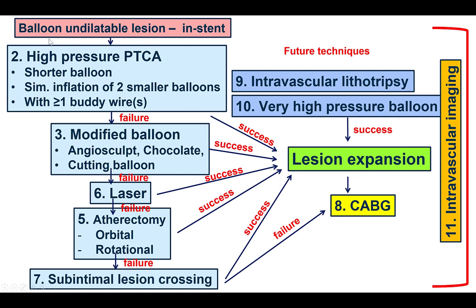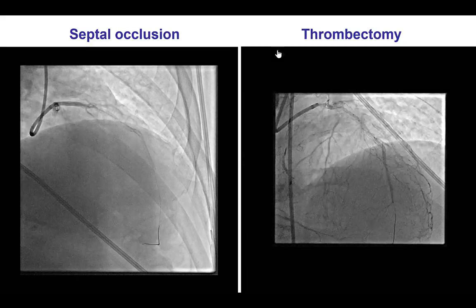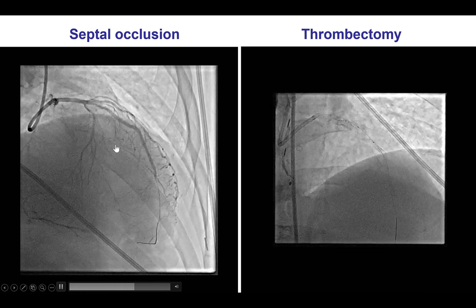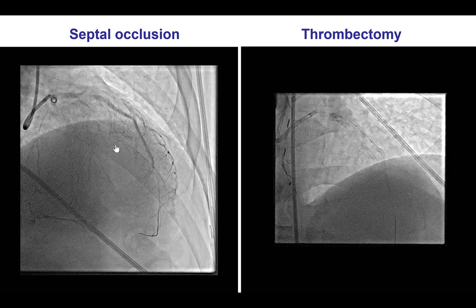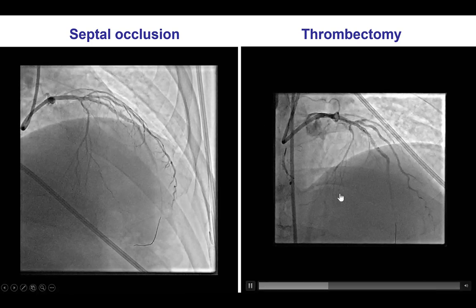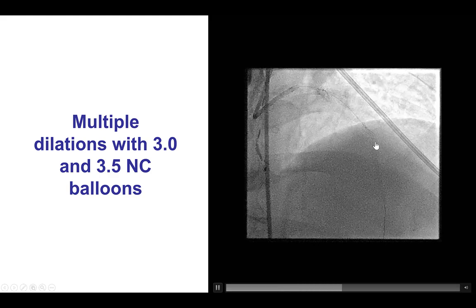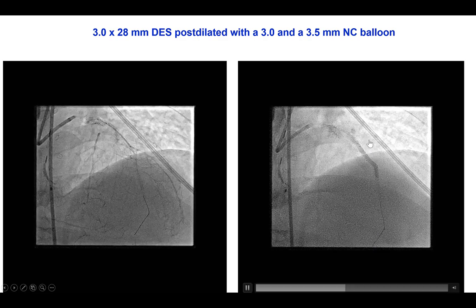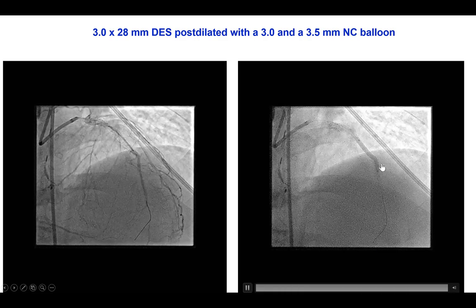So there were two problems: the balloon uncrossable lesion, and how to dilate the previously placed under-expanded stent. Typically this is achieved first with high pressure inflations of non-compliant balloons or plaque modification balloons. If this does not work, one can use laser and/or atherectomy, followed by subintimal lesion crossing. Intravascular lithotripsy balloons are a very promising modality for in-stent under-expansion. In this case, after balloon inflation, there was occlusion of a septal branch causing chest discomfort and ST segment changes, so thrombectomy was performed, restoring flow. Then multiple high pressure balloon inflations with 3.0 and 3.5 mm NC balloons were successful in expanding the previously placed stents.